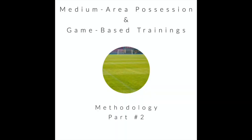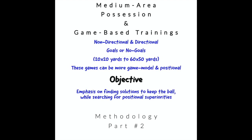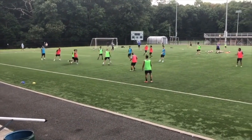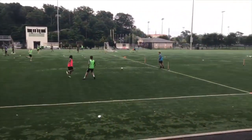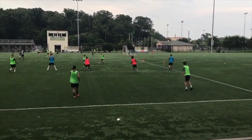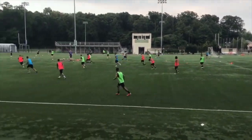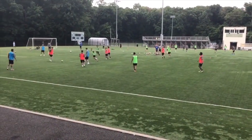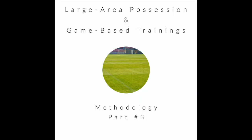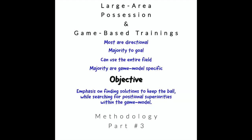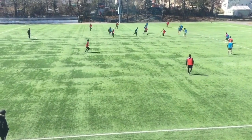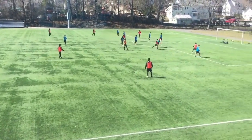Next is medium-based possession games. Medium-based games start to become a little more positional and tend to have goals. You can see in this game there are actually two goals, so it is directional, but there are no goalkeepers — the blue players are just neutrals — and this is over a bigger space with a lot of decision-making. Once we get into larger area possession and game-based trainings, it becomes more game-model specific. Most of them go to goal with real goals and goalkeepers, and the workload in these games is much higher.